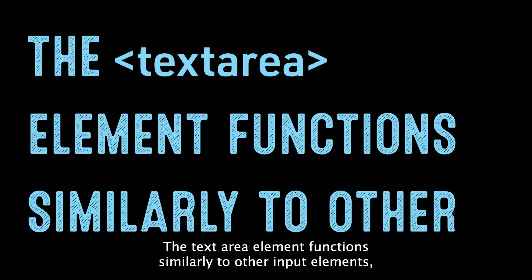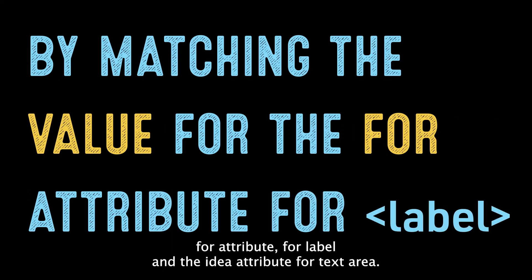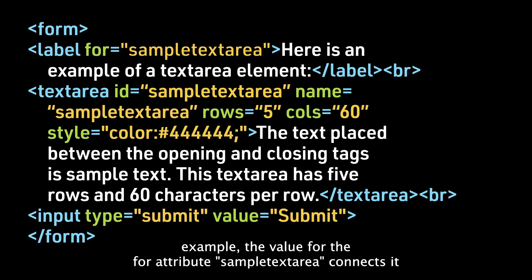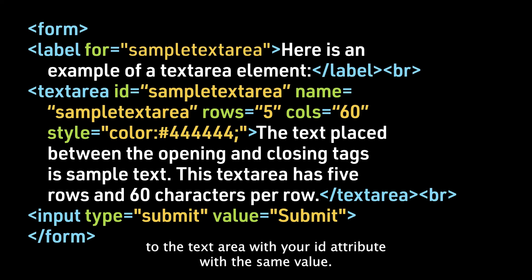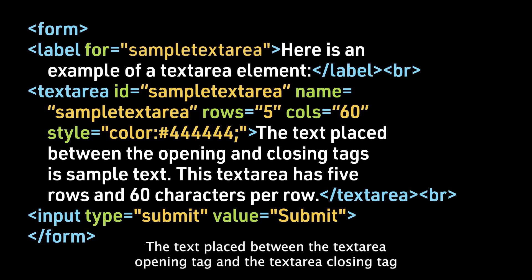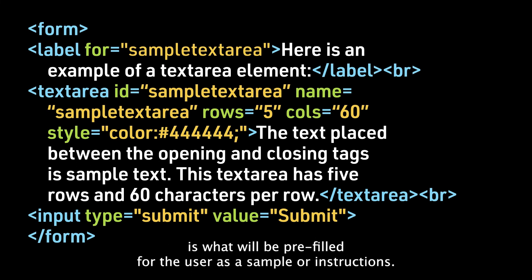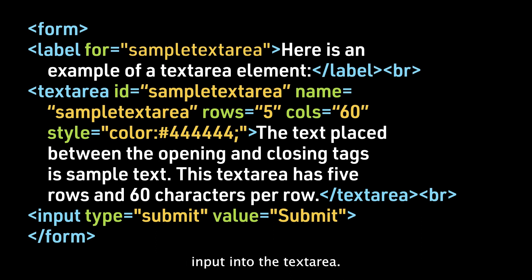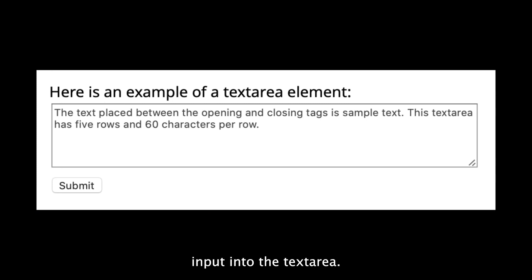The textarea element functions similarly to other input elements, so a label can be bound to your textarea by matching the value for the for attribute of the label and the id attribute of the textarea. In this code sample, the for attribute value 'sample text area' connects it to the textarea with the same id. We have a textarea set to 5 rows and 60 characters per row. The text placed between the textarea opening and closing tags is prefilled for the user as a sample or instructions — in this case styled a gray color. Lastly, we have an input type to submit the user's input into the textarea.